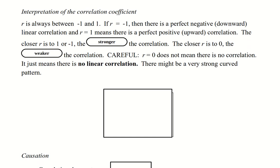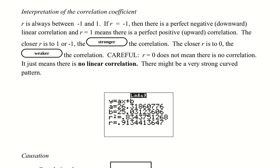But be careful. r equals 0 does not mean there's no correlation. It just means there's no linear correlation. There might be a very strong curved pattern. So, returning to the calculator screen that we had earlier, we've got r right there, 0.9134413647.